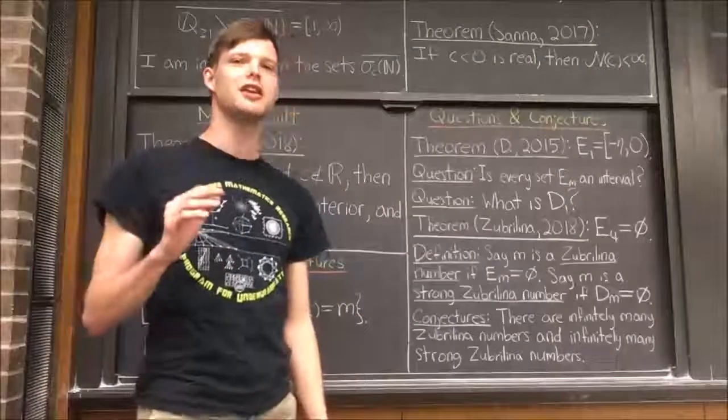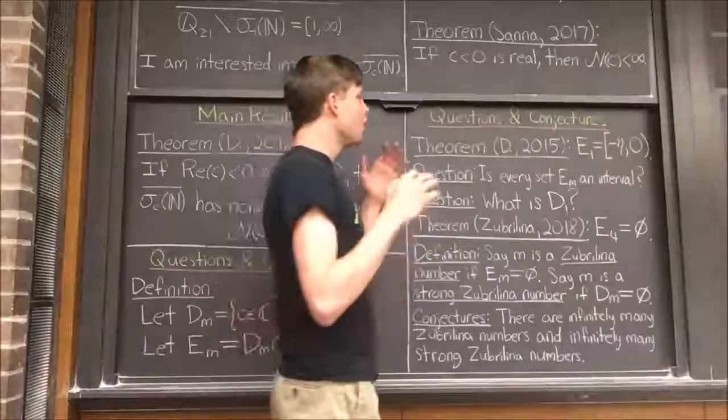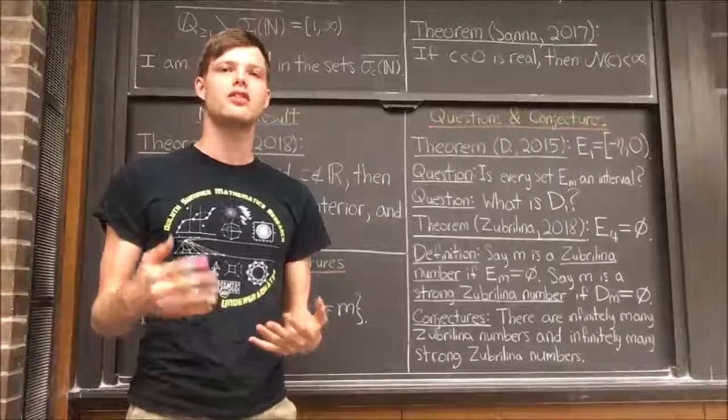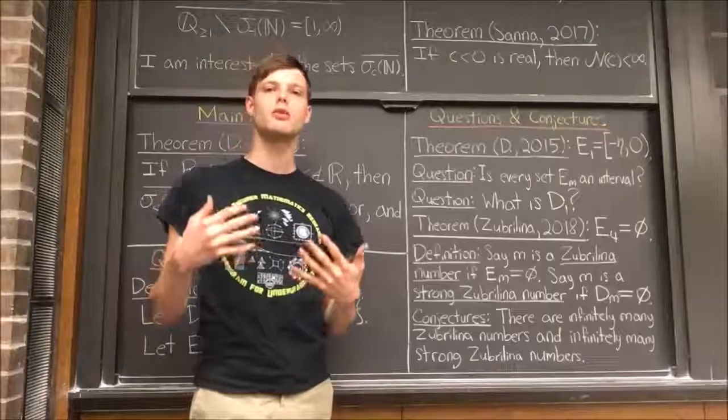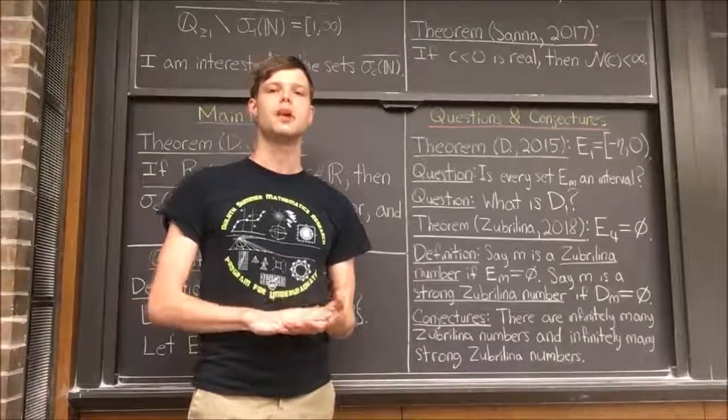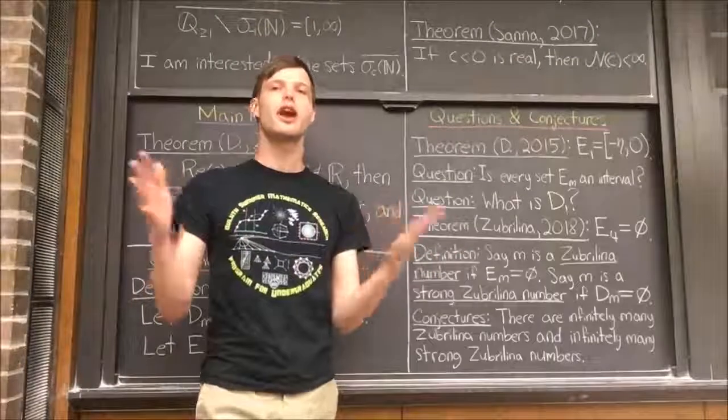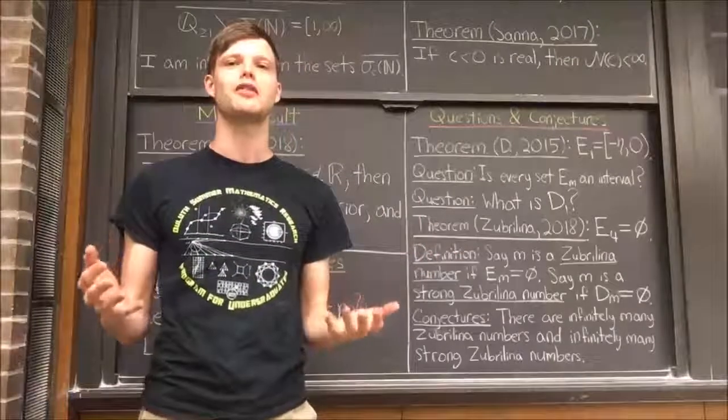Another question that I found particularly interesting is this one. What is D_1? D_1 is the set of complex numbers c such that the closure of the range of σ_c is a connected set. But can we get some alternative description of this set D_1? And if not, is there anything non-trivial that we can say about D_1?